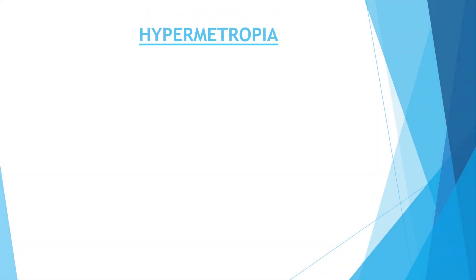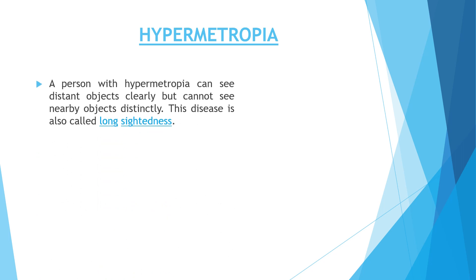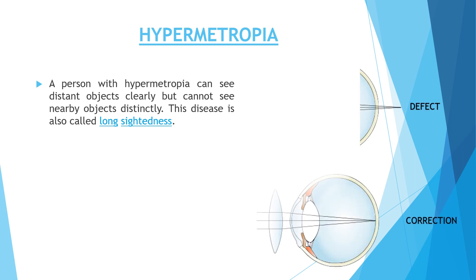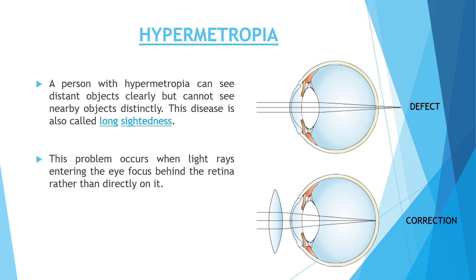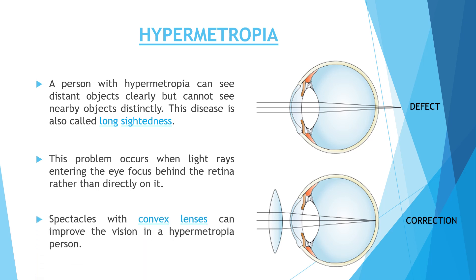Next is Hypermetropia. A person with hypermetropia can see distant objects clearly but cannot see nearby objects — this is called long-sightedness. This problem occurs when light rays entering the eye focus behind the retina rather than directly on it. Spectacles with convex lenses can improve the vision in a person with hypermetropia.